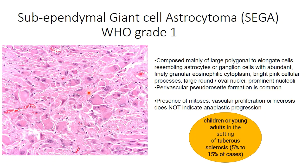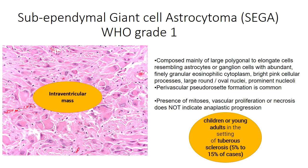The SEGA slide shows large polygonal or elongated cells resembling ganglion cells with prominent nucleoli, bright pink cytoplasm, and somewhat eccentric nuclei. Presence of mitosis and vascular proliferation or necrosis does not upgrade this tumor to anaplastic morphology. It occurs in children and young adults, usually in the setting of tuberous sclerosis in 5-15% of cases, and typically presents as an intraventricular mass.